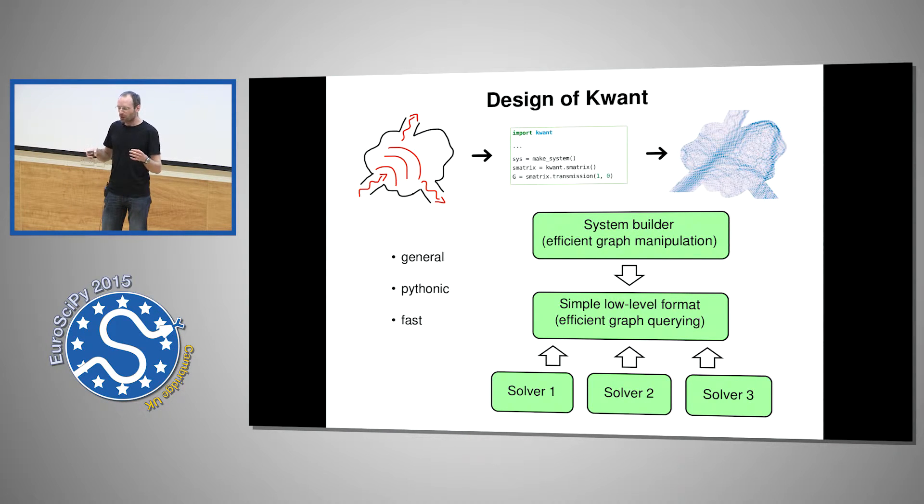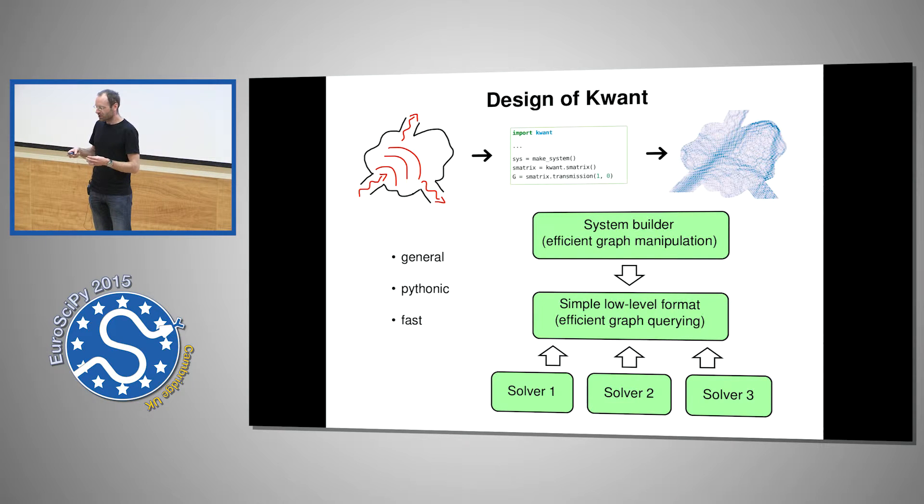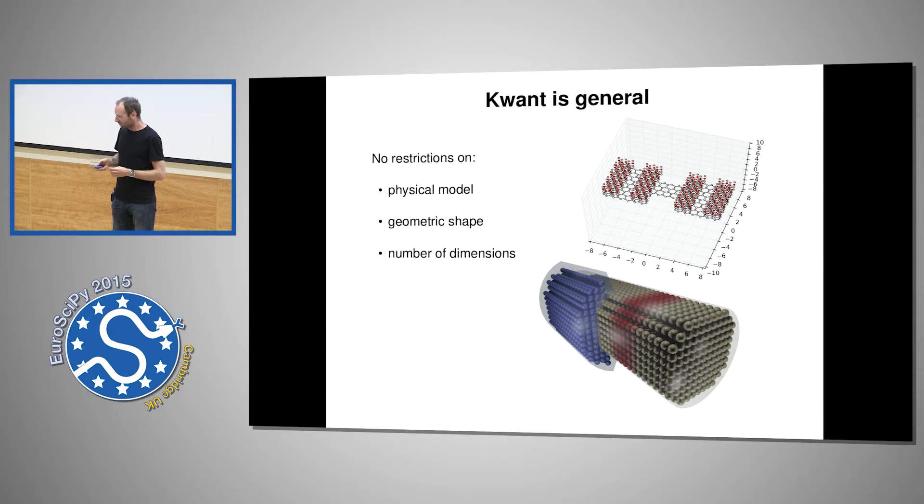In order to be both general, Pythonic and fast, we tried to come up with—it's important how you structure your software on the top level. Our project deals with these graphs which are actually very simple objects, but creating such graphs in a general way from scratch involves, it's not always very straightforward. That's why we decided to structure the package in such a way that there is a central low-level format which is simple and can be queried by solvers which calculate the observables. There is a high-level builder which is used by the user to create the systems, and the simple low-level format is the result of a compilation of the high-level builder.